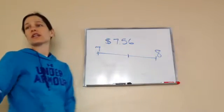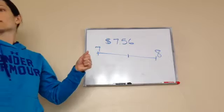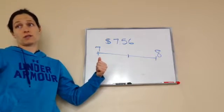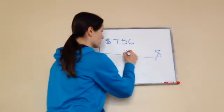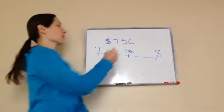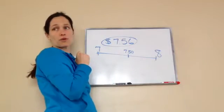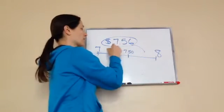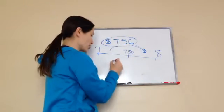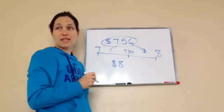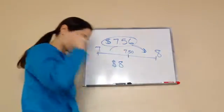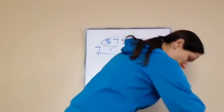We're not looking at time — time is 60. How many coins are in a dollar? A hundred. So it'd be 50. Seven dollars and 50 cents is halfway. So where would 7.56 go? It would go this way, closer to eight dollars. So we know that 7.56 is closer to eight dollars. That's how we round that money problem to the nearest whole number.